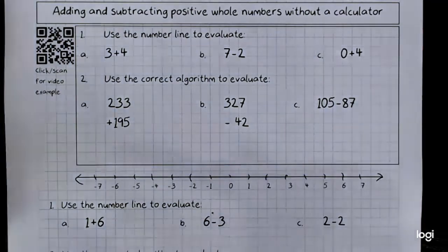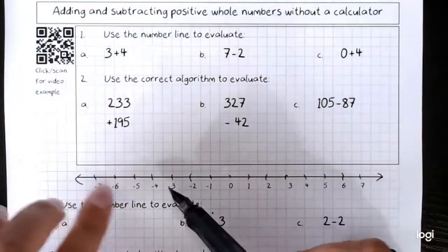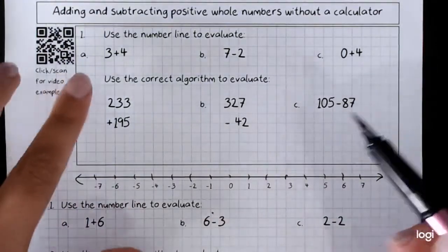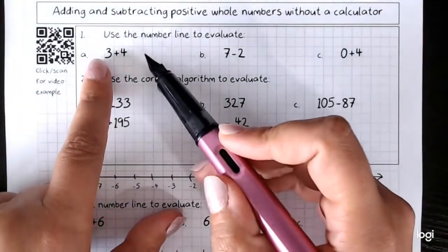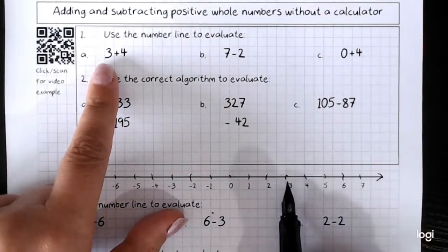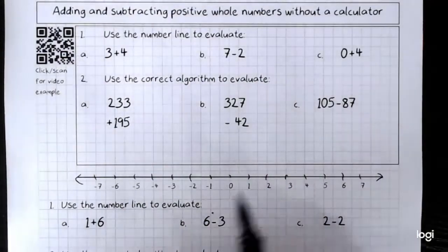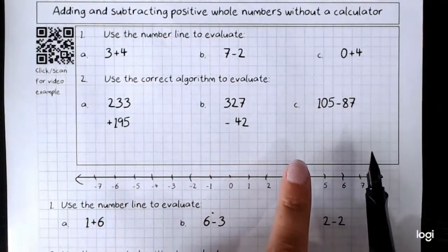One way to help us add and subtract numbers without a calculator is using a number line. We've run across this before. We've got 3 plus 4. Start on the first number, 3. Remember that if we are adding, overall we're gaining, we move to the right on the number line.